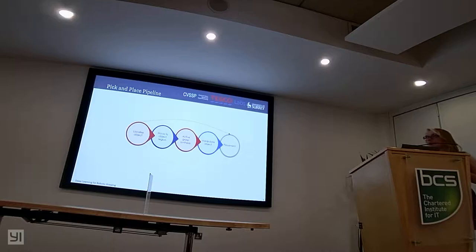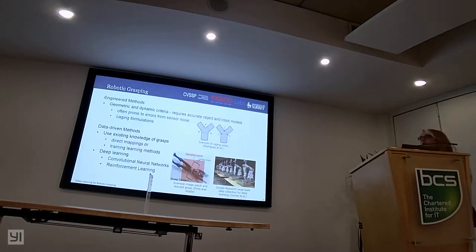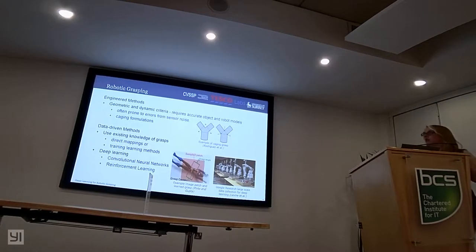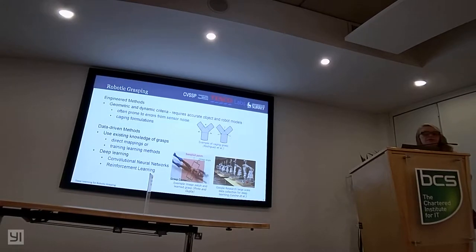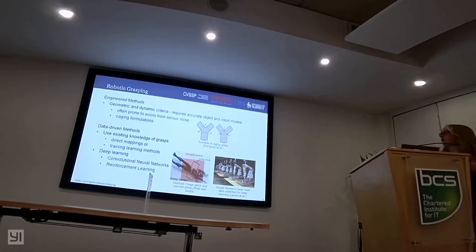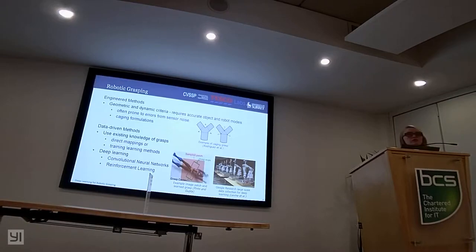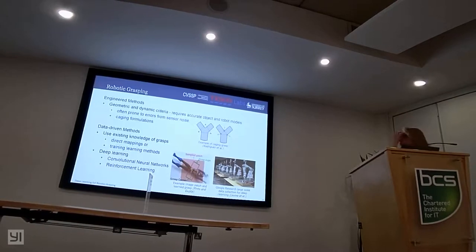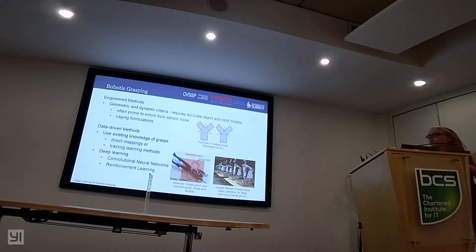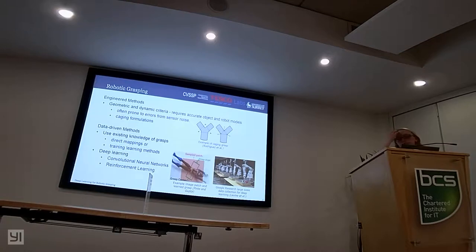In order to try and get human level performance on this pick and place issue we split it up into the way that humans do it. First we have to localize the object, move towards the object, do the active grasp synthesis of creating a stable grasp around it. Then we need to manipulate the object in some way and then finally place it down without damaging the object or the environment. We focus on localizing the object and then the active grasp synthesis using the perception for the object and then the control side for the grasp synthesis.